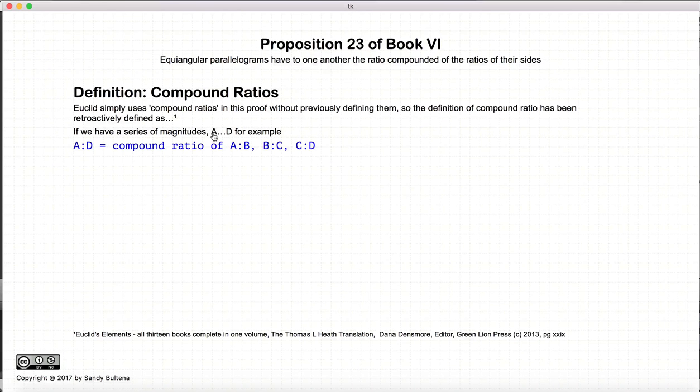So again, in the book that I'm using as my reference, if A to D, or A to D is defined as the compound ratio of A:B, B:C, and C:D.